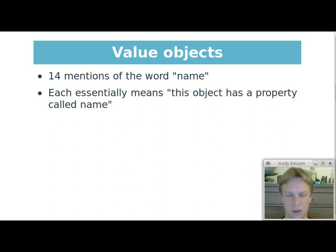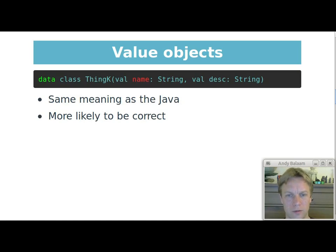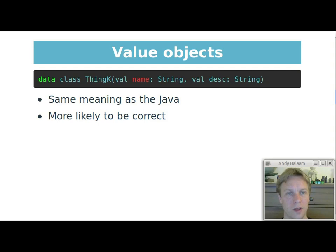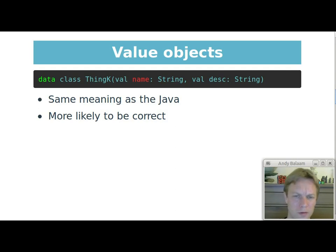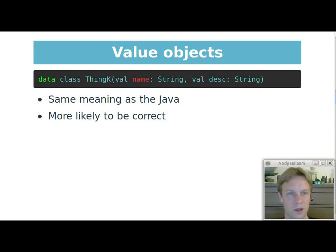We know we need a hashCode function whenever we've got an equals function, and we know that for testing in a nice way you often need an equals function. You also need a toString function because it makes your error messages and test assertions look better — so you end up writing all this stuff. The Kotlin code for an exactly equivalent class looks like this. That's all of it. We use the word 'data' before the word 'class' in Kotlin to say: basically write all of that code that we saw on those previous slides for me.